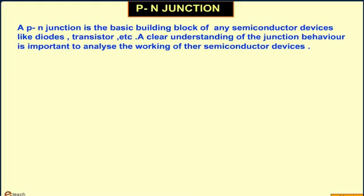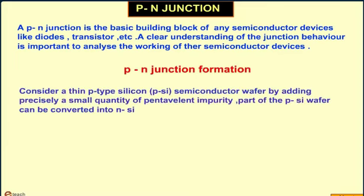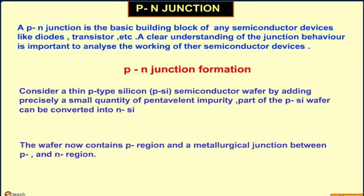Understanding the junction behavior is important to analyze the working of other semiconductor devices. Consider a thin P-type silicon semiconductor wafer. By adding precisely a small quantity of pentavalent impurity, part of the P-type silicon wafer can be converted into N-type silicon. The wafer now contains a P-region and an N-region, and a metallurgical junction between the P and N-region.